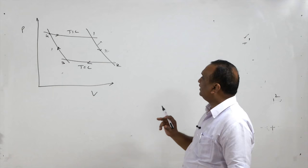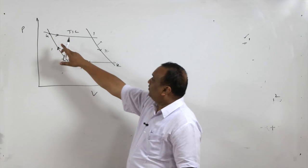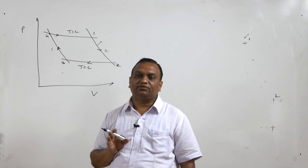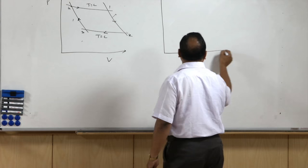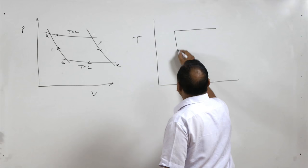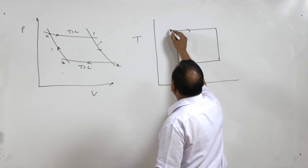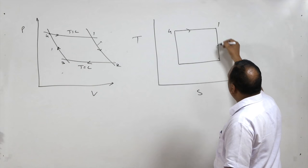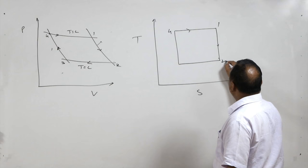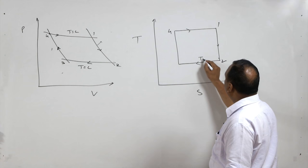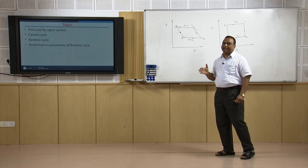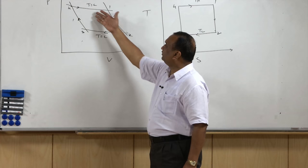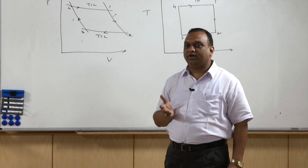Process 1 to 2 must be very fast to maintain the isentropic condition, while process 4 to 1 — the constant temperature process — must be very slow since there is no change in internal energy. If gas is used as the working fluid, these alternating fast and slow processes are very difficult to realize in practice.